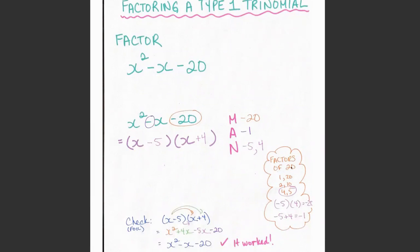I know that some combination here of these numbers is going to have to give me -20, and some combination here also has to add to -1.